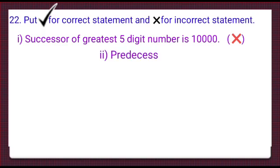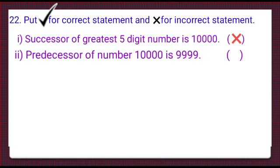Second part. Predecessor of number 10,000 is 9,999. We know predecessor is a number 1 less than the given number. So, we will subtract 1 from 10,000 and on subtracting we get 9,999. Yes, 9,999 is the predecessor of 10,000. This statement is correct and we will put a tick here.